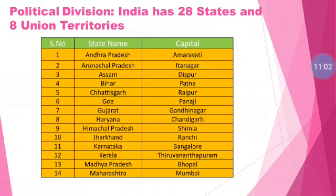India got independence on 15th August 1947. The capital of India is New Delhi. India has 28 states and eight union territories. Now we have the state names along with their capitals listed alphabetically, which is very easy to remember.